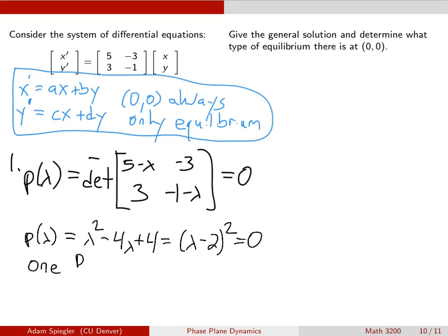So here we have one repeated real root. That root is going to give me an eigenvalue, which is lambda equals 2.